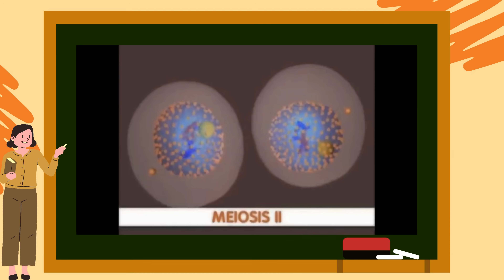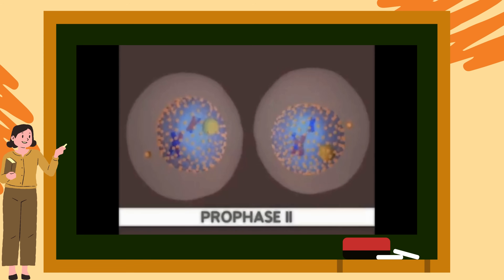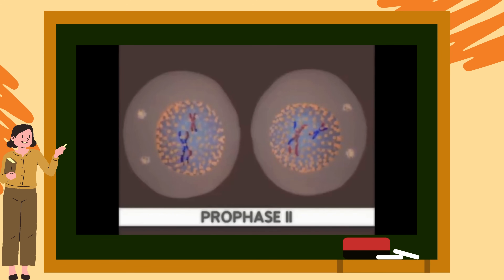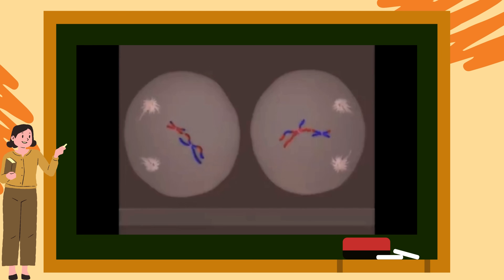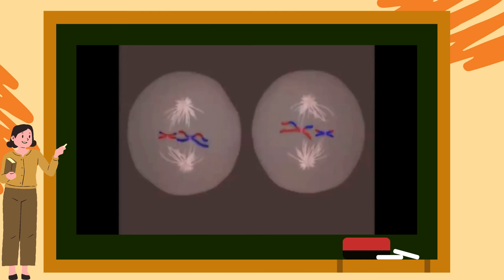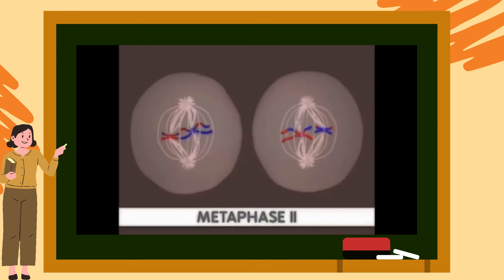Meiosis II is similar to mitosis. The first stage is prophase II — chromosomes condense, the nuclear envelope breaks down and the spindle apparatus forms. The major difference between prophase II and prophase I is that the daughter cells have only one copy of each homologous chromosome, so in prophase II there is no synapsis of homologous chromosomes or crossing over. In metaphase II, the chromosomes align at the equator of the cell, and the alignment is random since the sister chromatids are no longer identical.